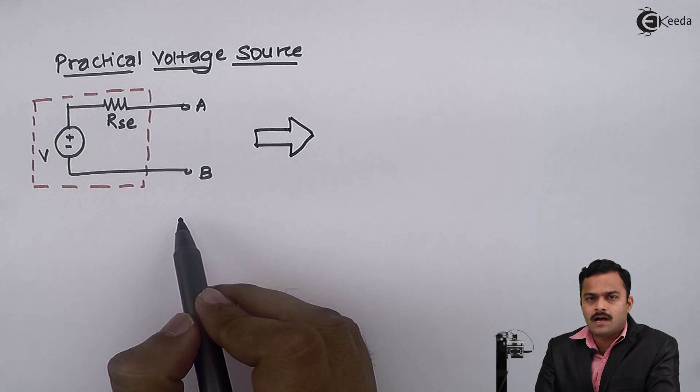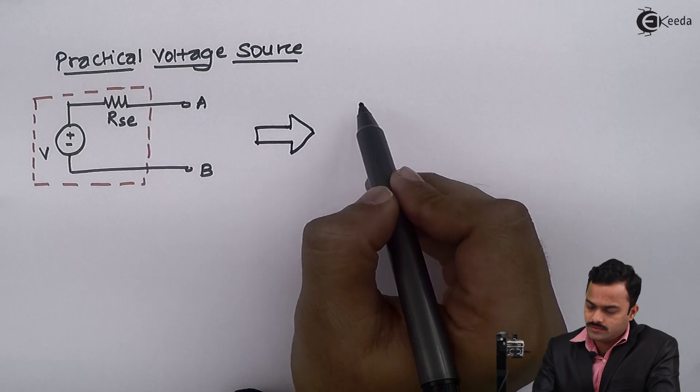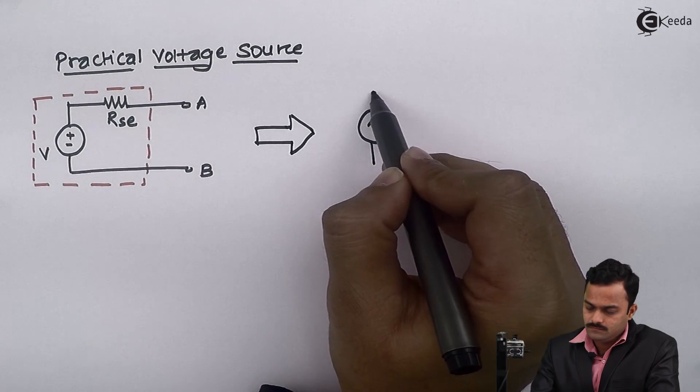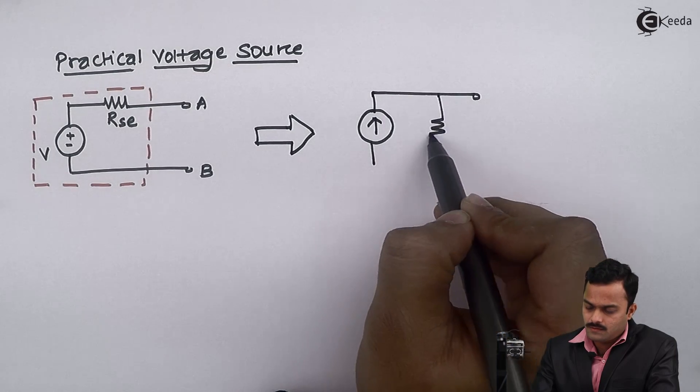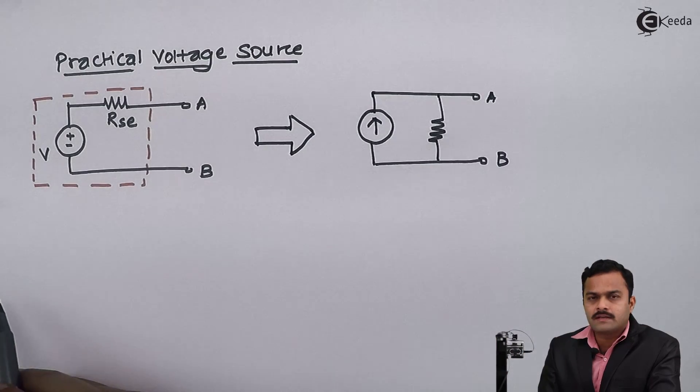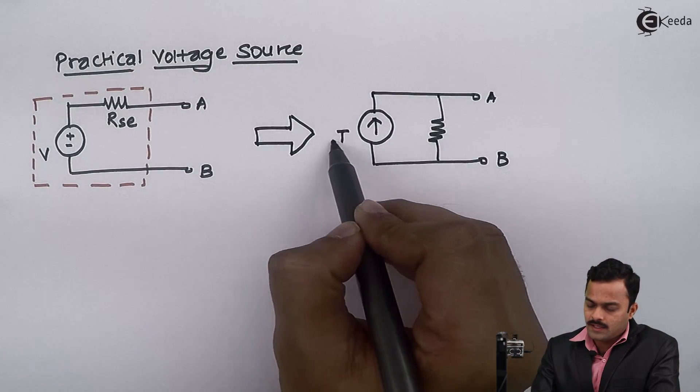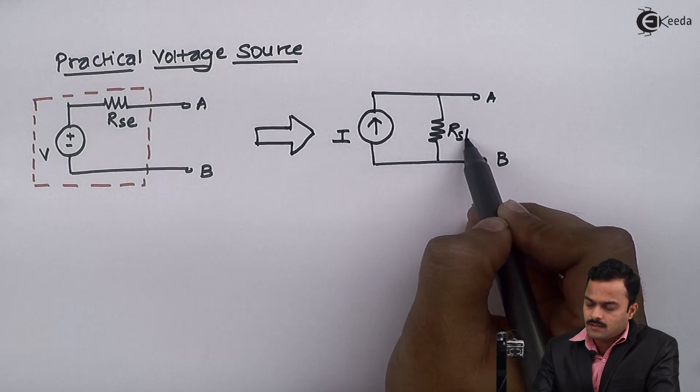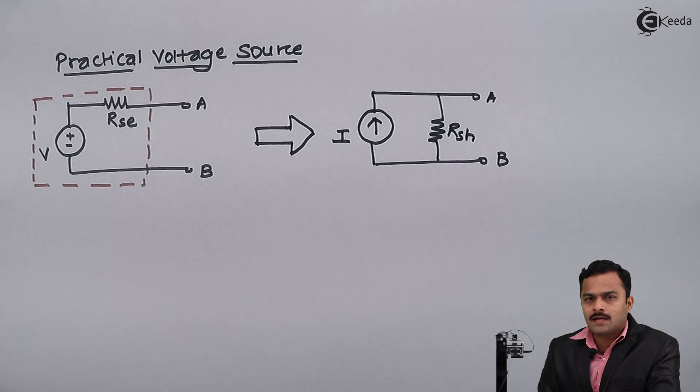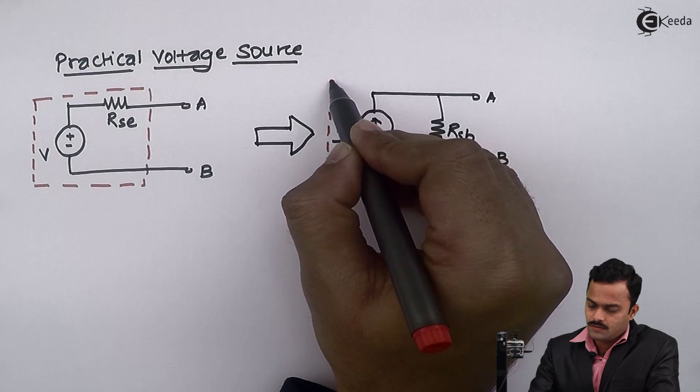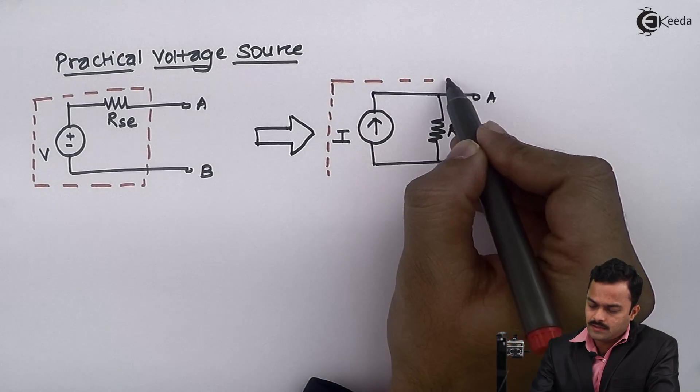First I will draw a practical current source. As we know, practical current source consists of a current value and a large resistance connected parallel to it. This combination is a practical current source.